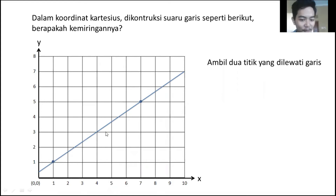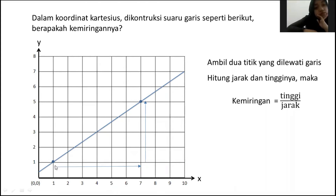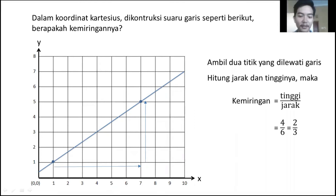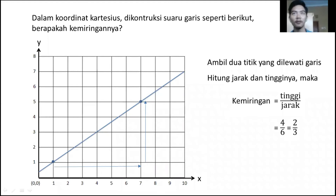Berarti kita tahu tingginya: 1, 2, 3, 4 — dan jaraknya: 1, 2, 3, 4, 5, 6. Berarti kemiringannya adalah tinggi dibagi jarak yaitu 4/6 atau 2/3. Jadi benar bahwa kalau kita menghitung suatu garis, kita boleh hanya melihat kemiringan dari bagian garis ini saja, karena kemiringannya akan sama dengan keseluruhan garis. Kita tinggal lihat saja tingginya berapa, jarak berapa, dan kita dapatkan kemiringannya. Kita harus mencari dua titik sembarang yang dilewati oleh garis.